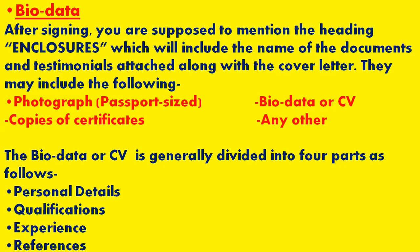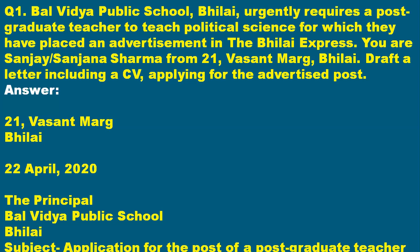The second part is bio data. In bio data, write every detail about yourself — paste your photograph, write whatever you have done in your career, attach copies of certificates, and attach any other relevant information with your job application. In bio data, write your personal details, then qualification, then experience, and then a reference — the person on whose reference you are applying in that company, school, or business.